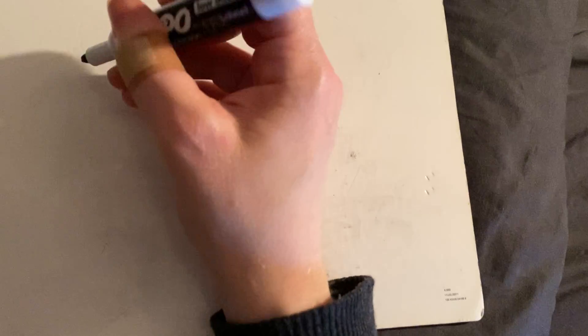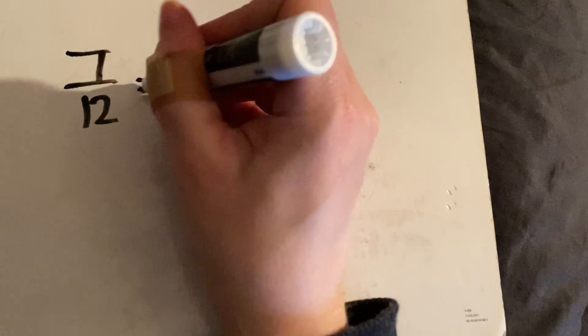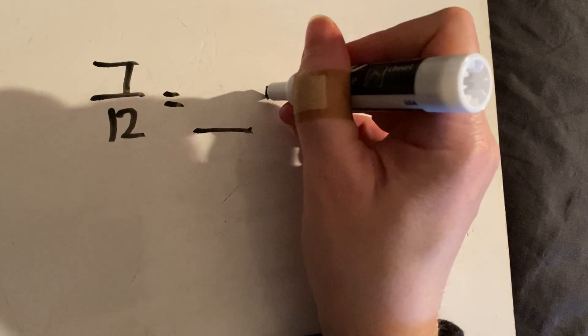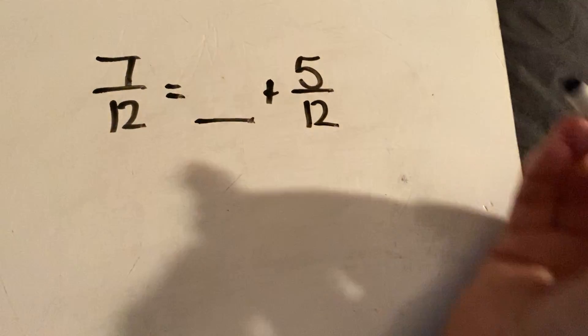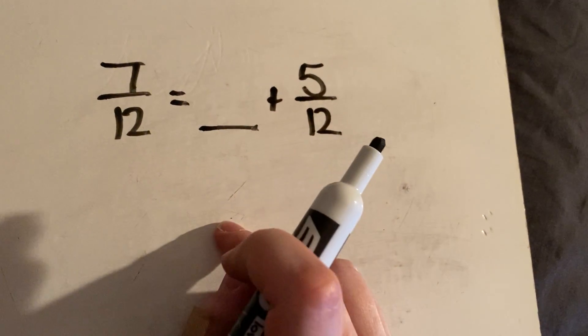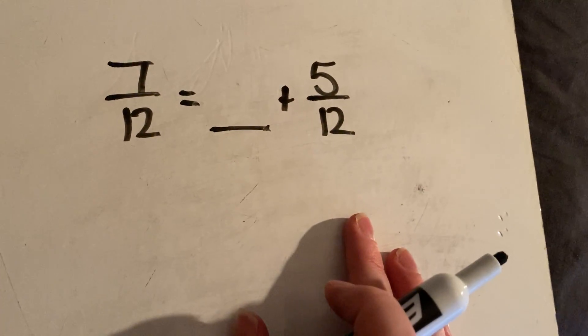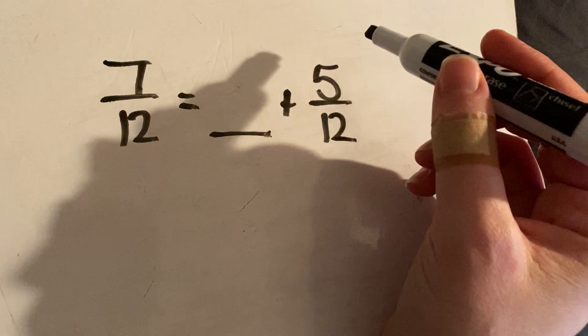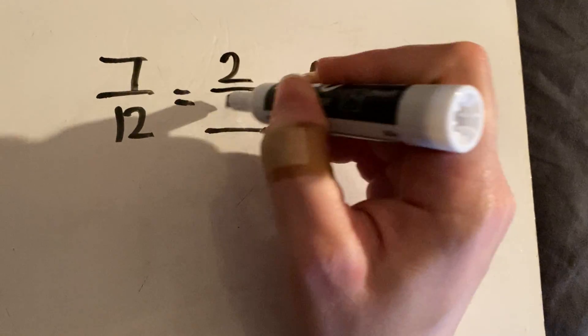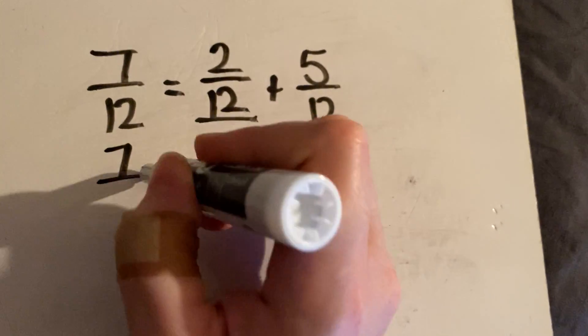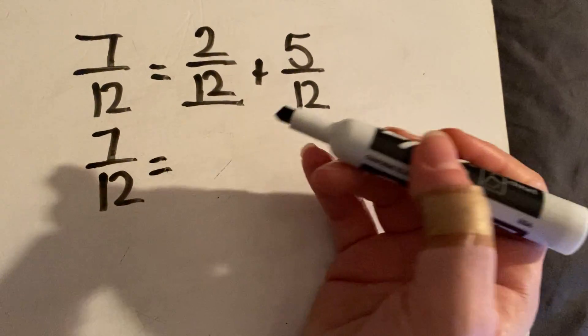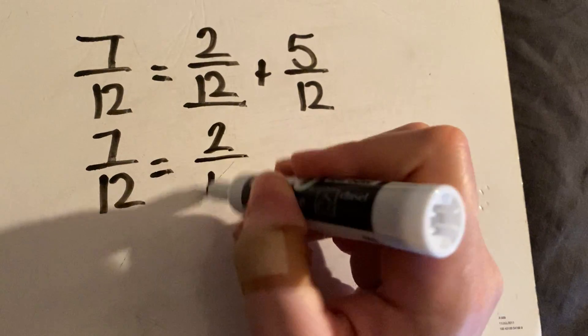Number four is the same process, just mixed around, and some of them have multiple possible answers. It might say something like seven twelfths equals something plus five twelfths. You're just looking for what goes in that missing blank: what plus five is seven? Two plus five is seven, so two twelfths goes there.